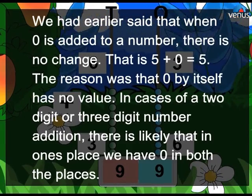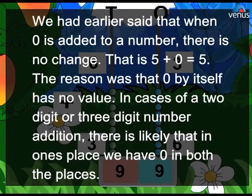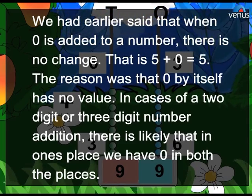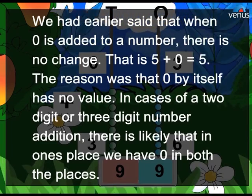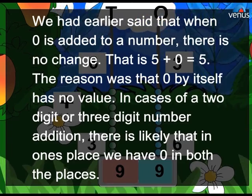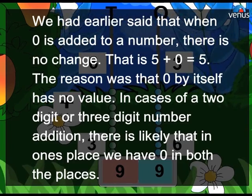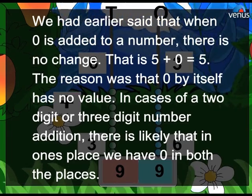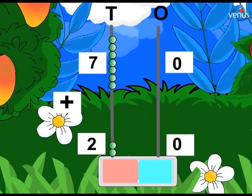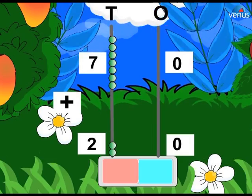We had earlier said that when 0 is added to a number, there is no change. That is 5 plus 0 equals 5. The reason was that zero by itself has no value. In cases of a two-digit or three-digit number addition, there is likely that in ones place we have zero in both the places.